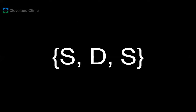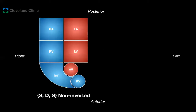When the segmental anatomy is normal or non-inverted, we say it is SDS — visceral atrial situs solitus, D-loop ventricles, and great artery situs solitus. Going back to our drawing, it will look like this: right atrium, right ventricle, and infundibulum all on the right side of the patient; left atrium and left ventricle on the left side of the patient with normal ventriculo-arterial alignment. SDS is non-inverted.